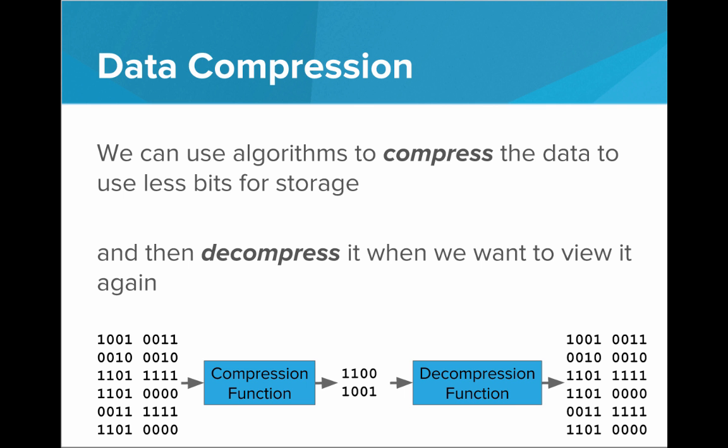This is how compression generally works: when you want to store our data, we will pass our data into a compression algorithm, a compression function, and that will compress the data to use less bits for storage. Then, when we want to view that data again, when we want to see the image or see the text, we will pass that compressed data into a decompression algorithm, a decompression function, and that will decompress that data and restore it back to its original state.